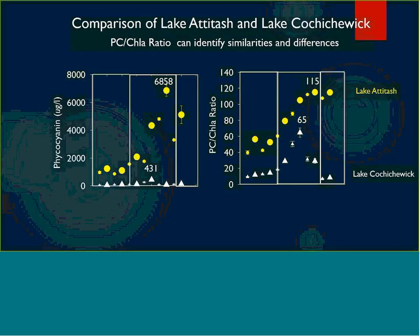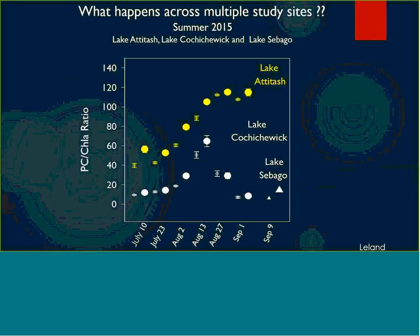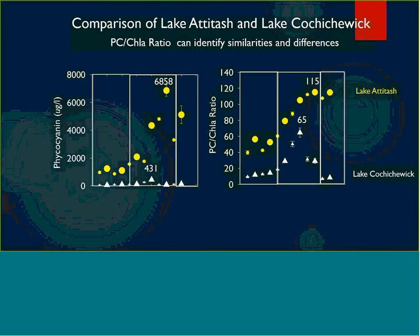I have a couple slides on some interesting work that Nancy Leland from our workgroup has done over this past summer. She has looked at the relationships between phycocyanin measurement and the readings between the phycocyanin and chlorophyll A ratio. She noticed that we can get more information out of that PC to chlorophyll A ratio than we can out of phycocyanin by itself. Looking at just the phycocyanin measurement, you can see a trend taking place within one lake but not within the other.